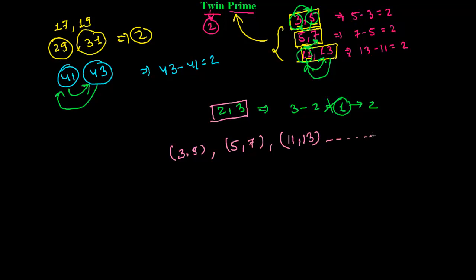Similarly, you can go a huge number of, you'll get, right. You'll get, like, 59, 61, 71, 73, 71, 73, a lot there, okay.